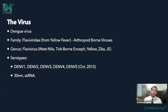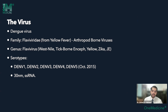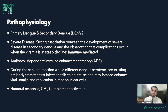In dengue, we have serotypes 1, 2, 3, and 4. A newly identified serotype, dengue virus 5, was identified in October 2015. It is a 30 nanometer single-stranded RNA virus. That covers the virology.